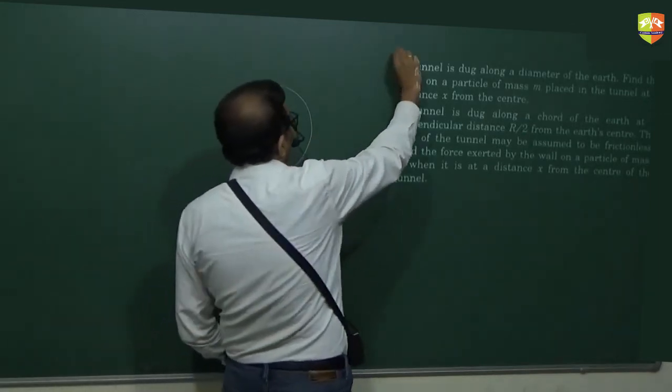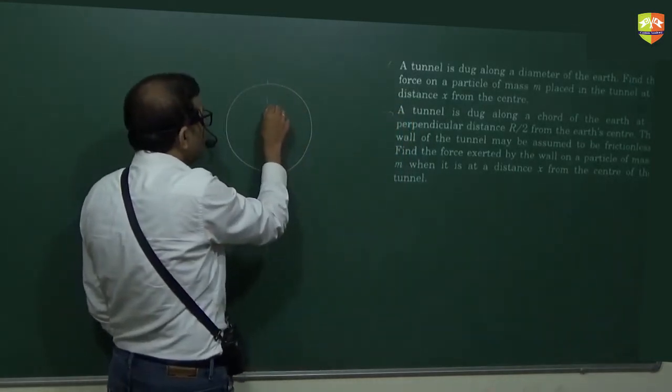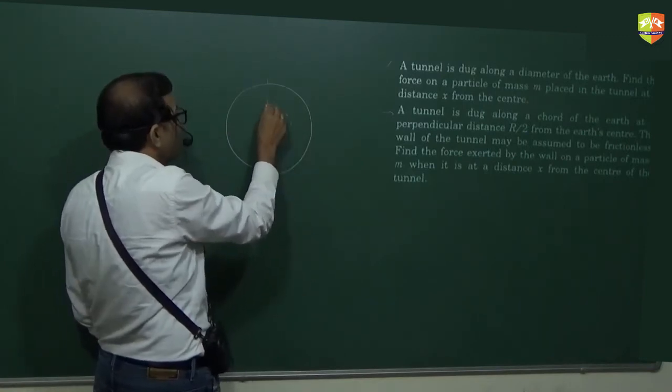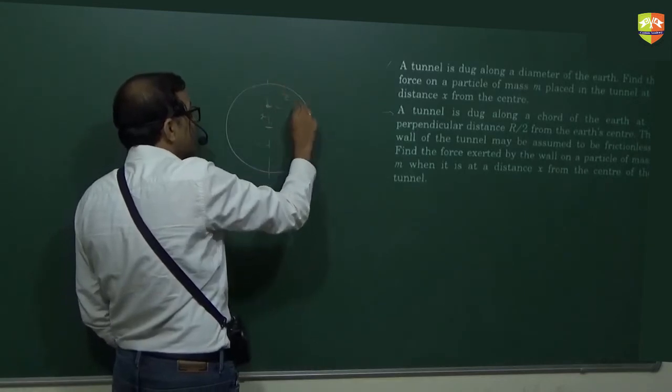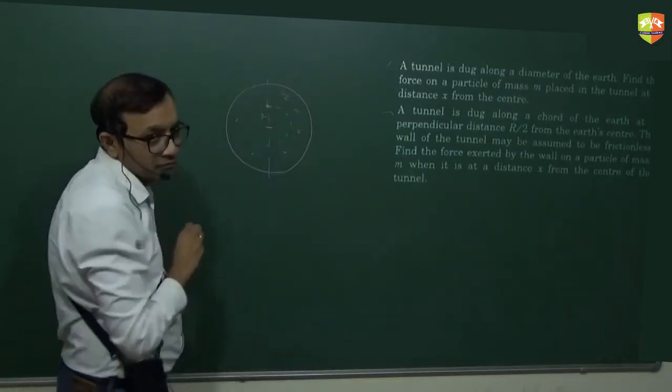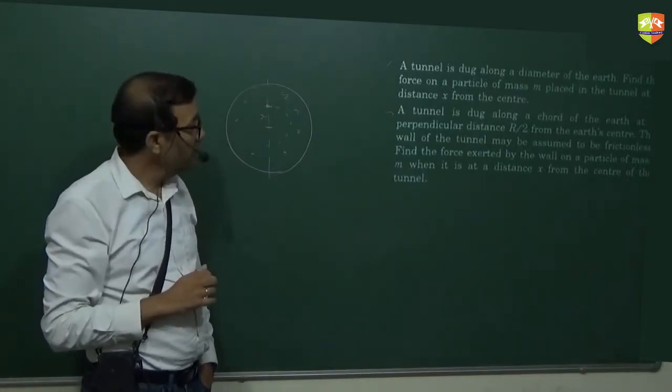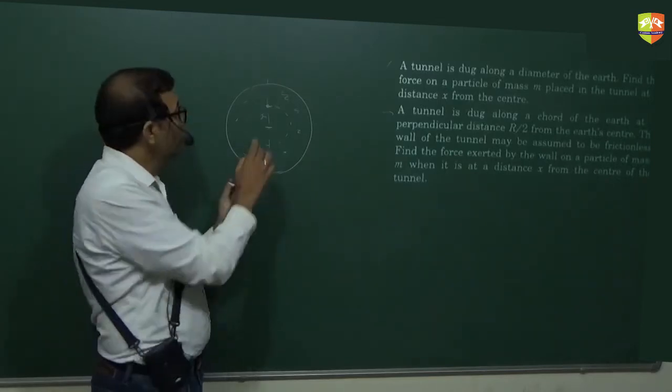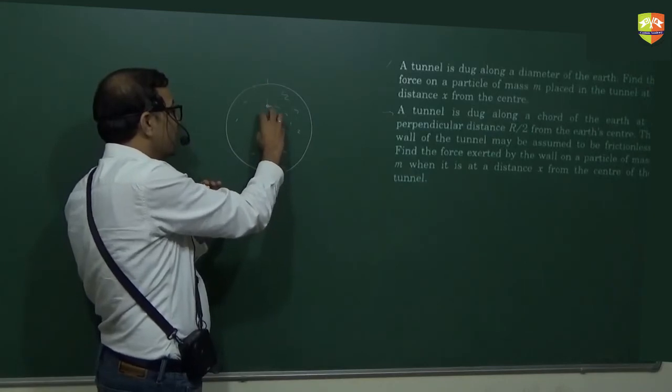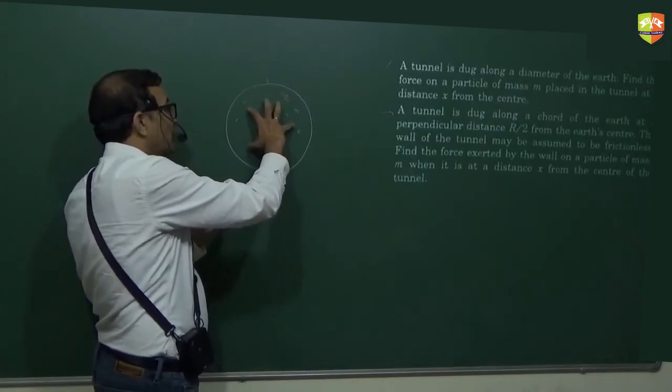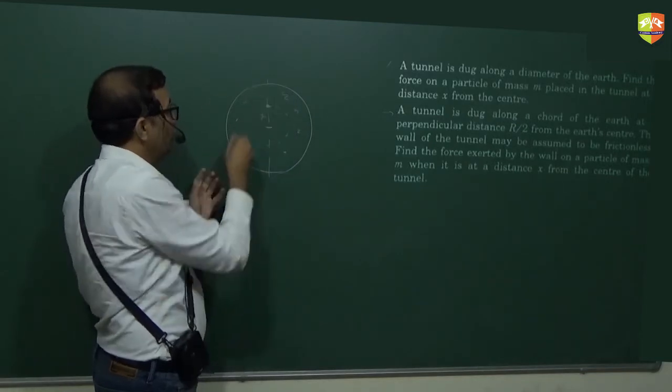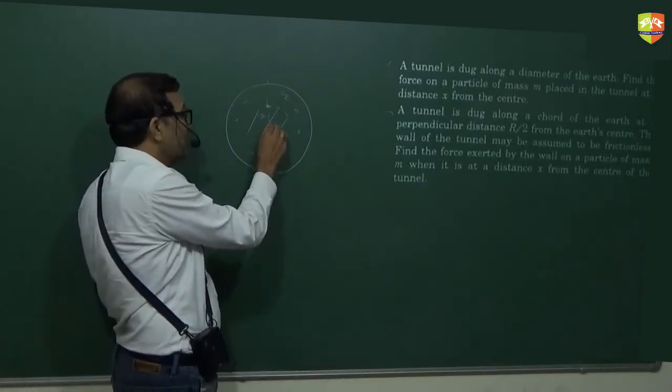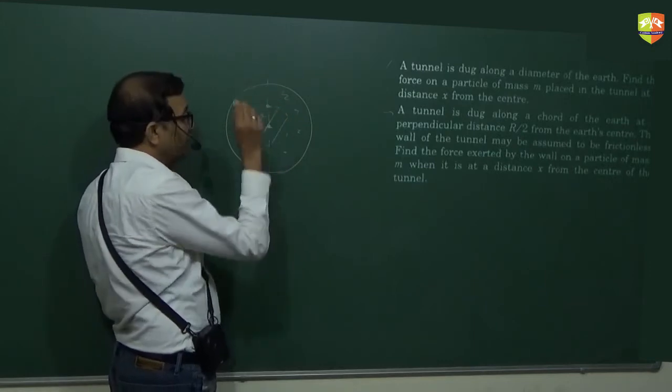Tunnel is dug along a diameter of the earth. Those who have got this, you can attempt the second one. So you are at a distance x from the center, you are here. If you are here, this portion, this portion will not exert any force on you, which is outside there. Because if you are inside a spherical shell, the force due to the spherical shell on the mass is zero. So if you consider that entire earth is made of spherical shells of different radius, after this point, whatever are the shells, they are not exerting any force on this mass. So only this portion is exerting the force and this portion will act as if located at the center.